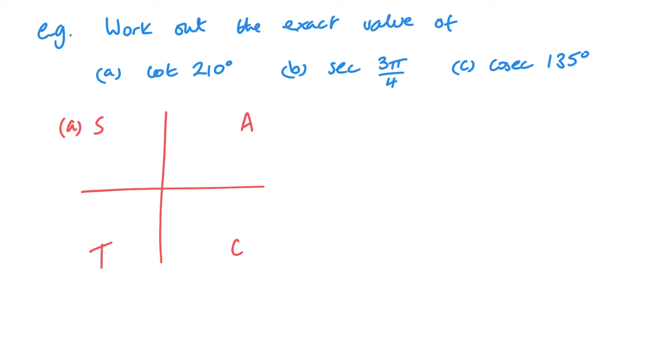Using my cast diagram, if you think about where it is, 210 is going to be this section here. 210 degrees. So we know that's 180. So 210 minus 180 means that this small angle here is 30. And you can see that in this section, tan is positive.